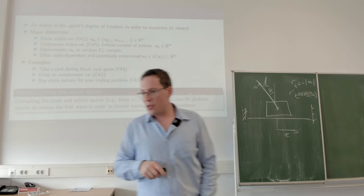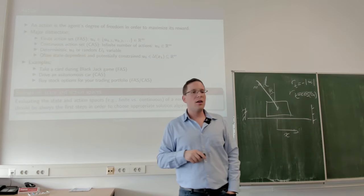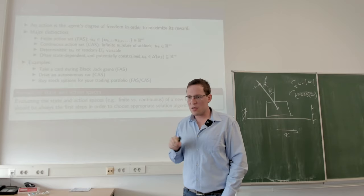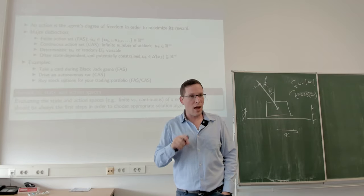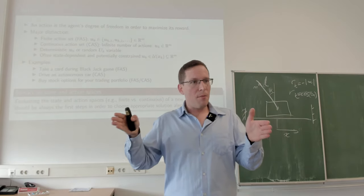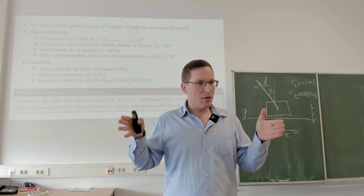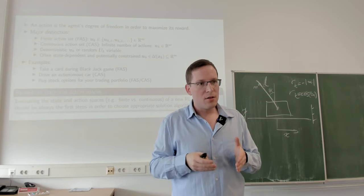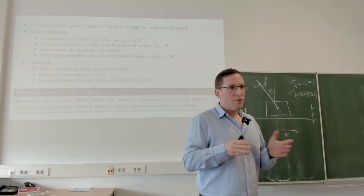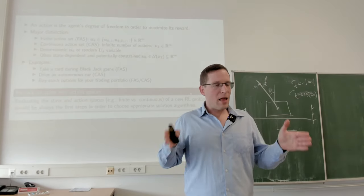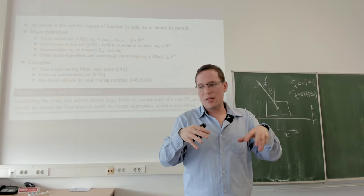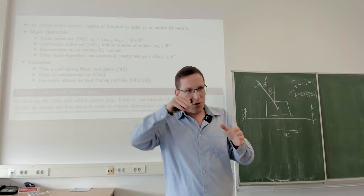Action is the agent's degree of freedom with which it can maximize its reward. There are a few distinctions: a finite control set has a discrete number of actions the agent can perform — in a maze, go forward, backwards, left, or right. That's it. The agent has a limited number of discrete decisions it can take.